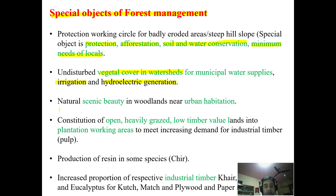Another special objective could be to promote scenic beauty in woodlands, parks, or near urban habitation. Likewise, heavily grazed low-timber-value lands can be converted into plantation working circles to meet the increasing demand for industrial timber, such as pulp for the production of paper.